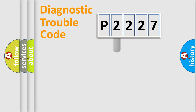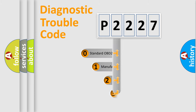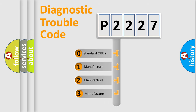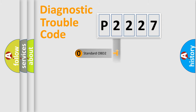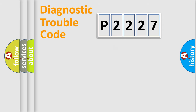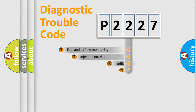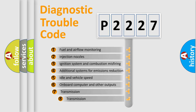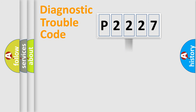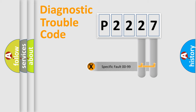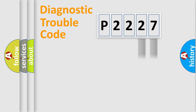This distribution is defined in the first character of the code. If the second character is expressed as zero, it is a standardized error. In the case of numbers 1, 2, or 3, it is a more specific expression of a car-specific error. The third character specifies a subset of errors. This distribution is valid only for the standardized DTC code. Only the last two characters define the specific fault of the group.